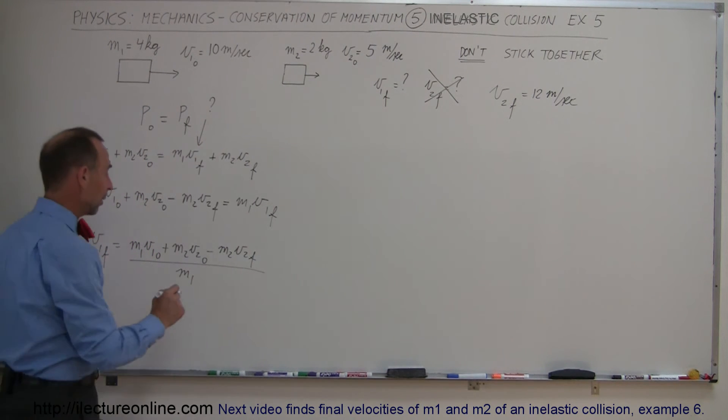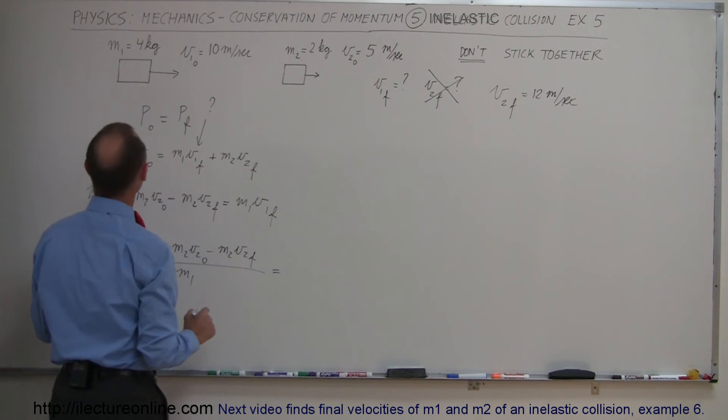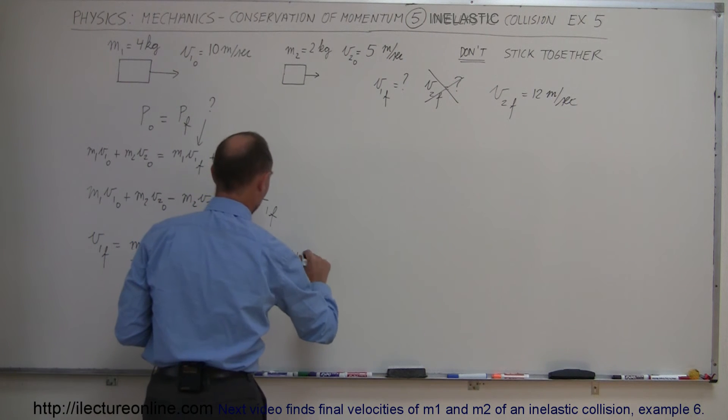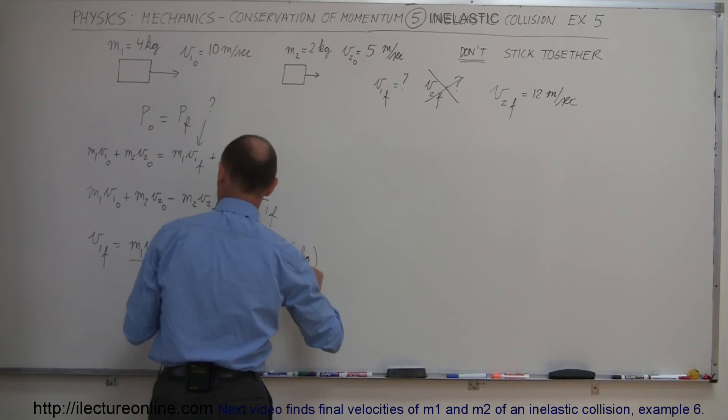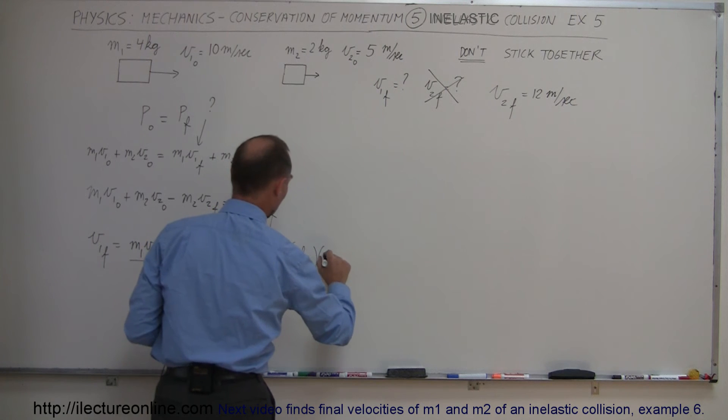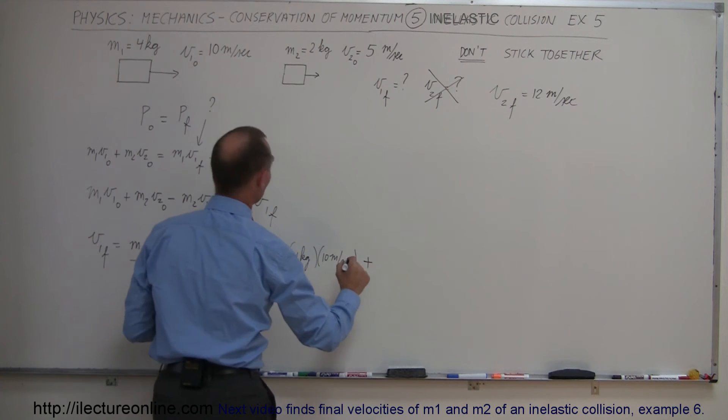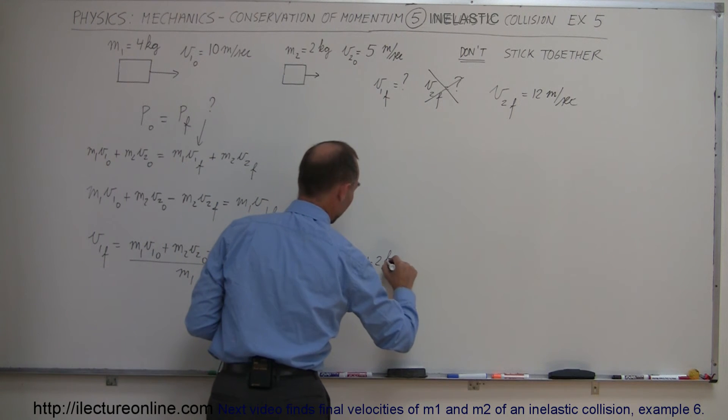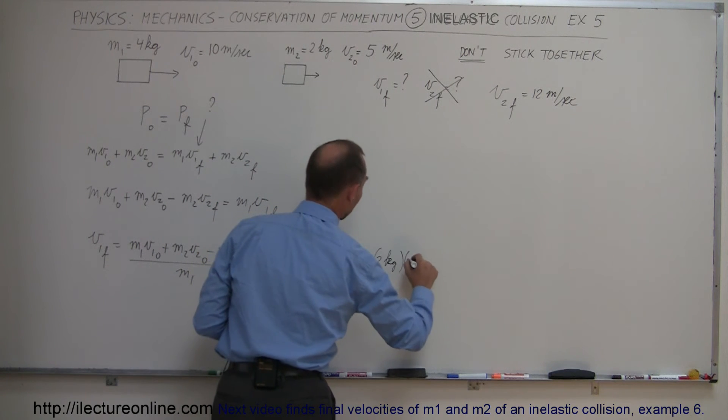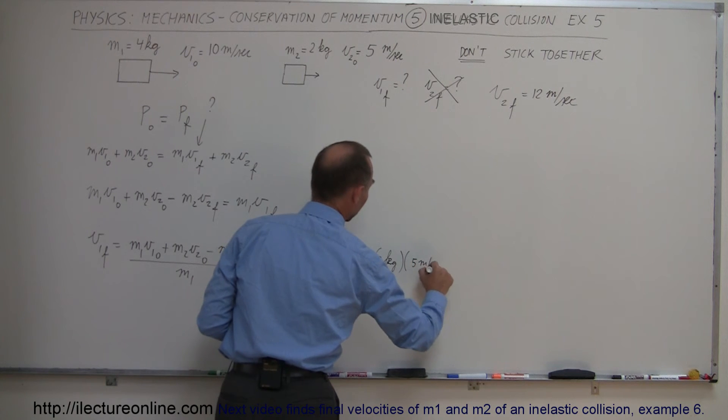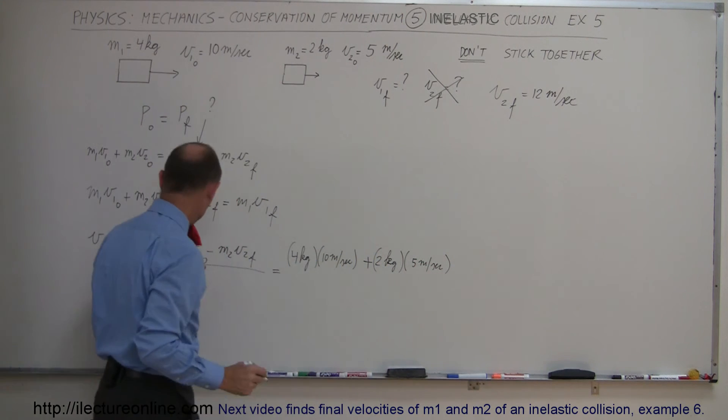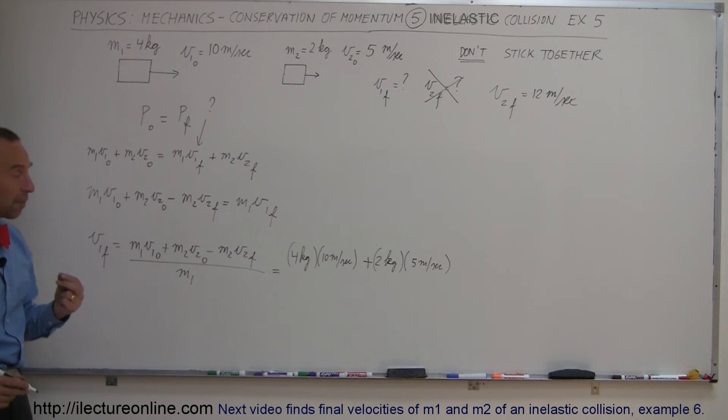Go ahead and plug in the values and see what we end up with. M1 is 4 kilograms and V1 initial is 10 meters per second plus M2 which is 2 kilograms times 5 meters per second. So now we have the two initial conditions, the two initial momentums.